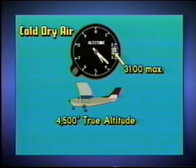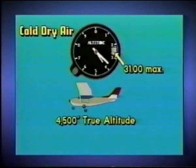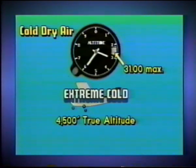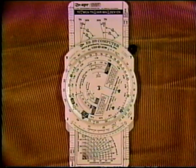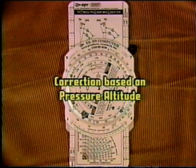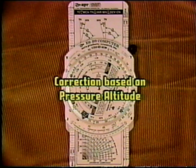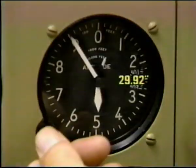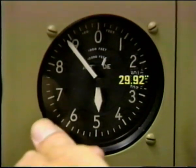Air traffic control will issue the actual altimeter setting. Because the altimeter is calibrated to indicate true altitude in standard atmospheric conditions, temperature errors can occur. Extremely cold temperature errors can produce an altimeter error of as much as 20%. Use your flight computer to correct the temperature error. This correction will be based on pressure altitude, not the indicated altitude. To find the pressure altitude at any given time, simply set the barometric scale to 29.92.